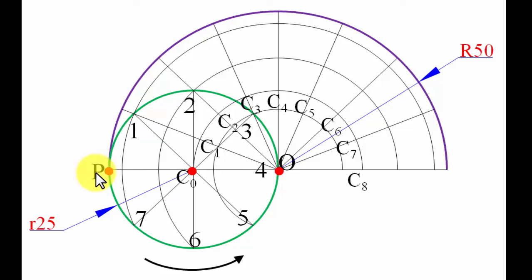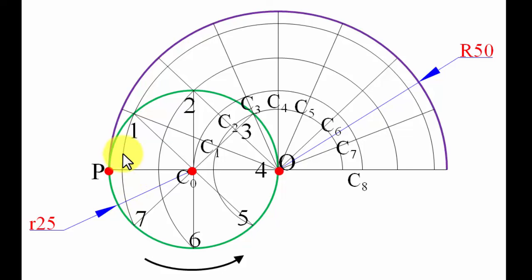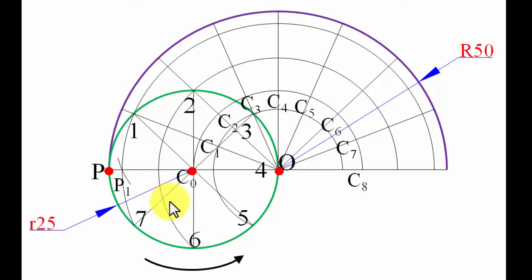Initially the center is at C0 and point P is at its starting position. As the circle completes a small revolution and point 1 comes into contact, the center moves to C1. With C1 as center and radius 25 mm, cut an arc through point 1 — this gives P1. The center then moves to C2, and with C2 as center through point 2, we get P2. All arcs have a radius of 25 millimeters, equal to the rolling circle radius.